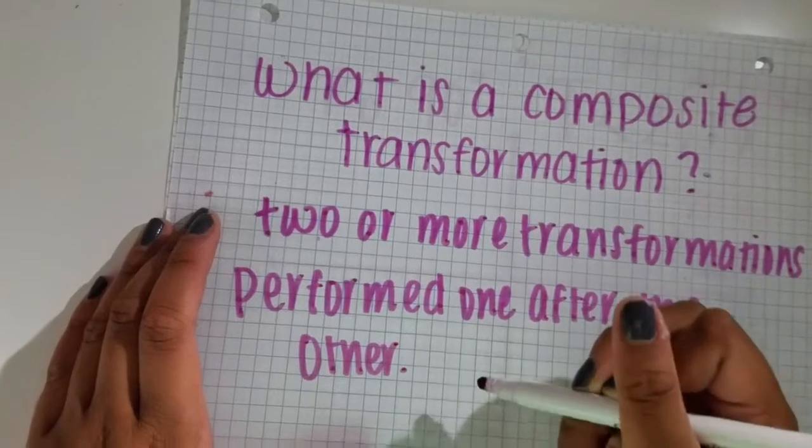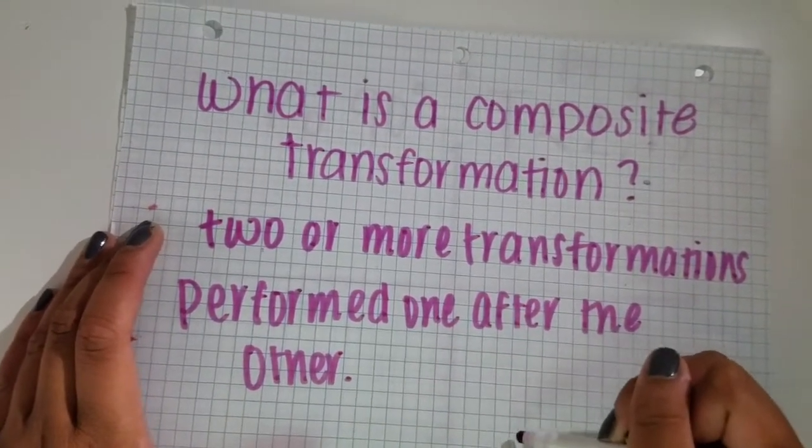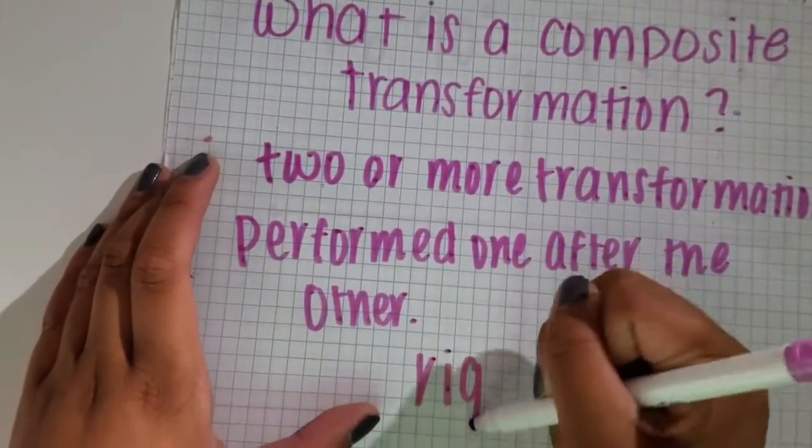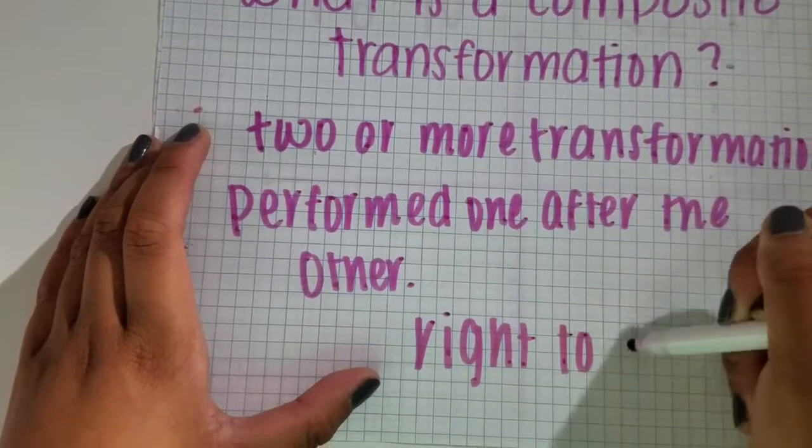When reading a composite transformation, you read from right to left.